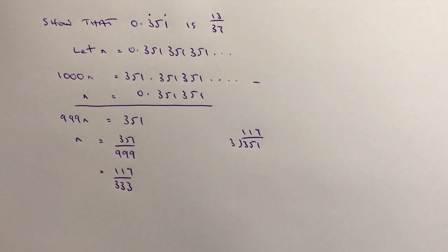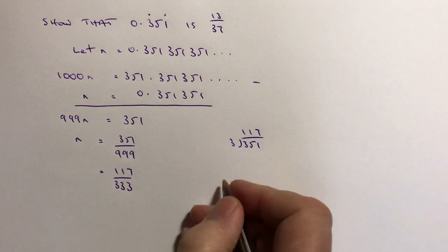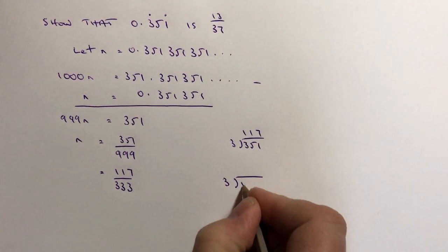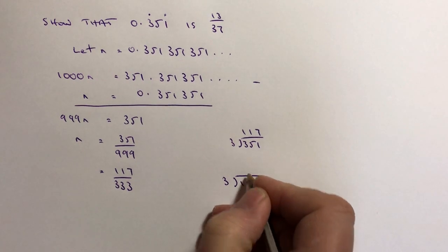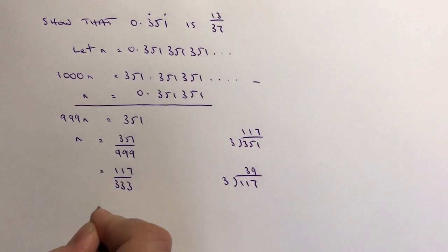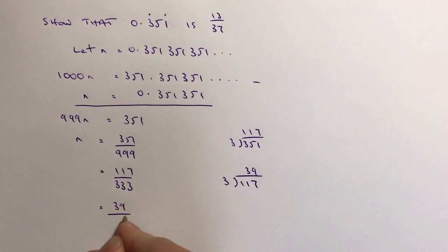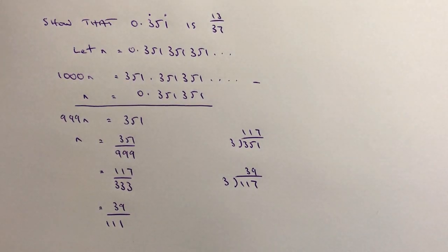And then the whole process starts again. So you'll notice that 117 also add up to 9. Therefore, it's a fairly safe bet that I can divide that through by 3 and I end up with 39 over 111.